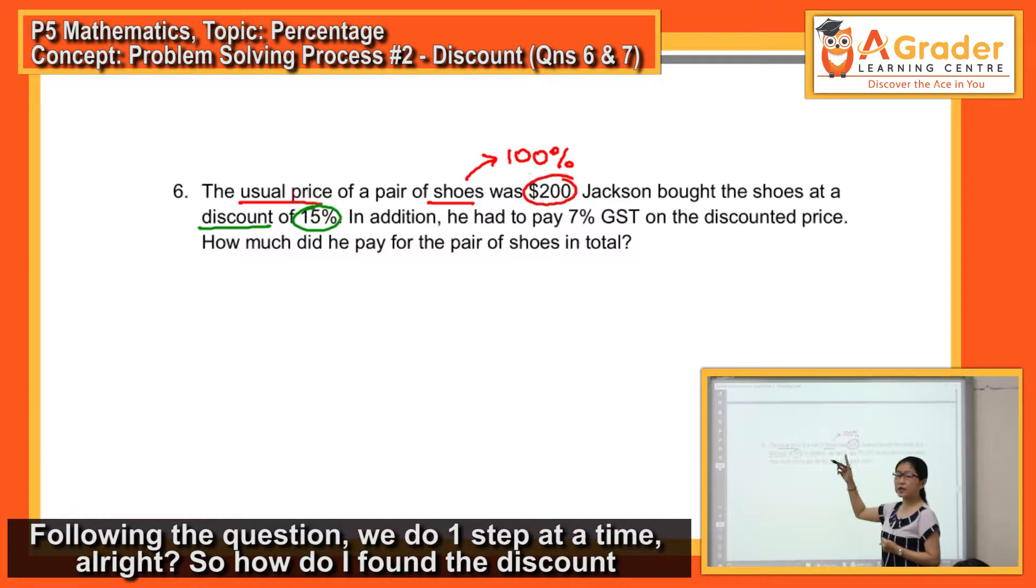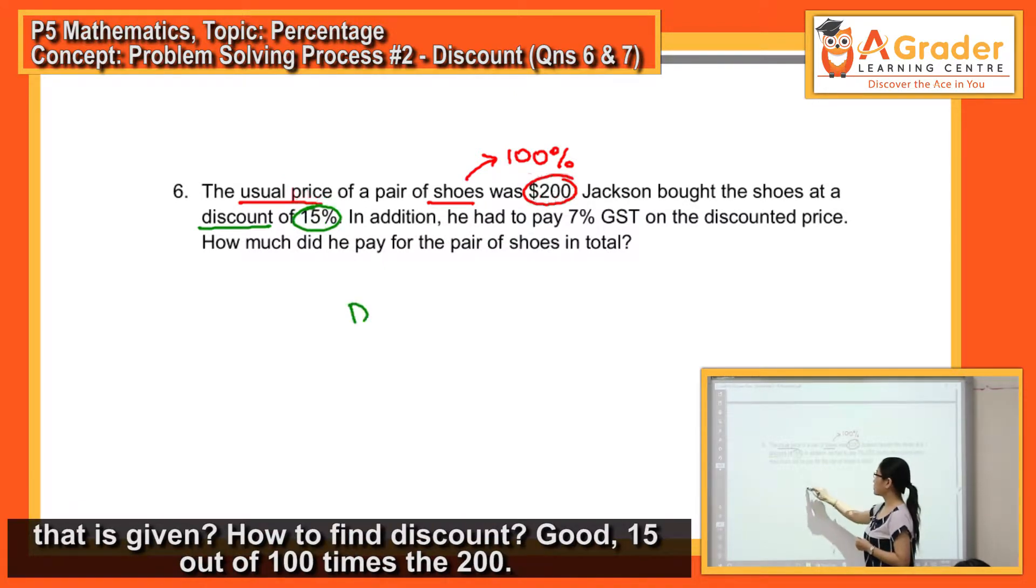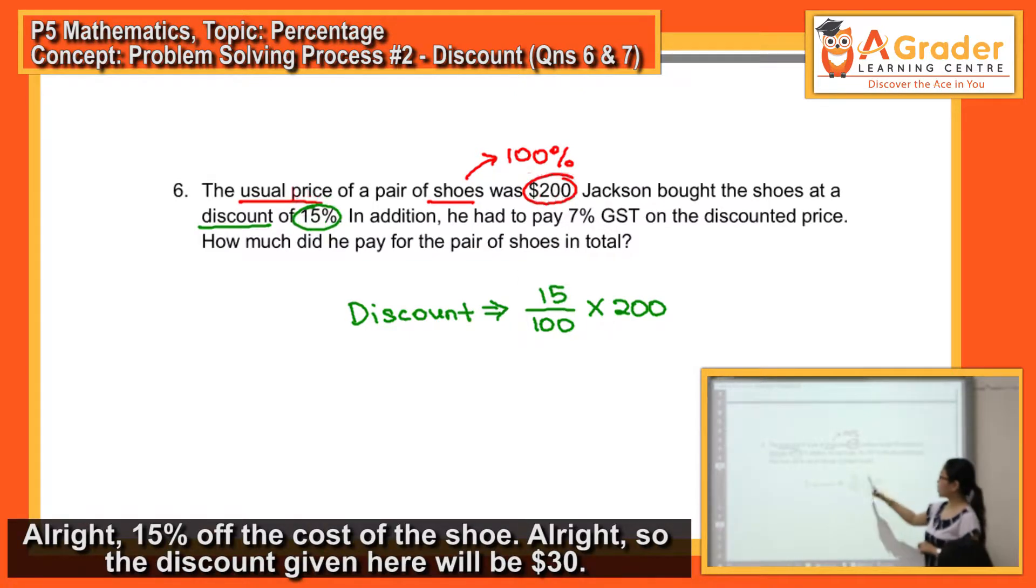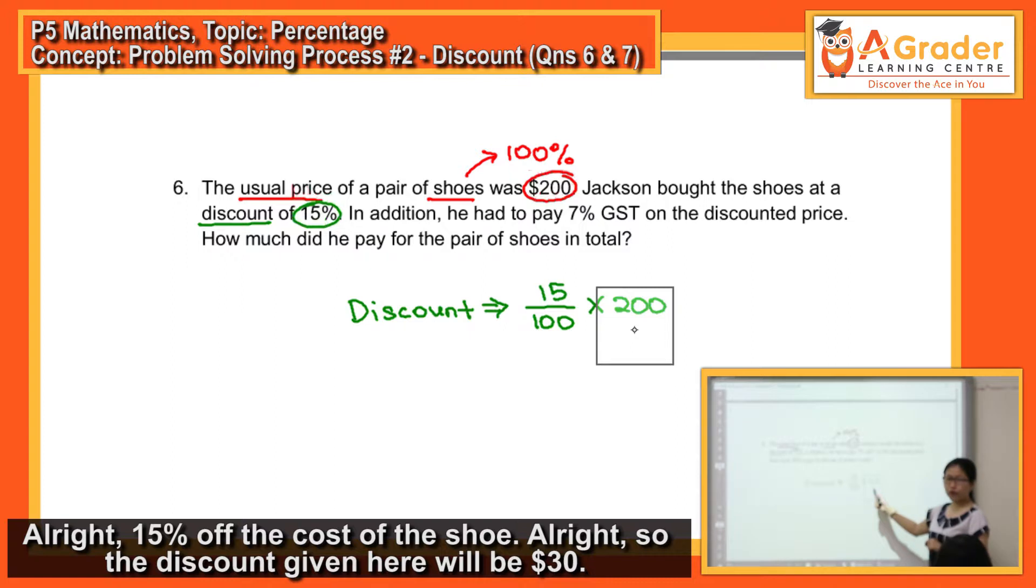So, how do I find the discount that is given? How do I find the discount? Good. 15 out of 100 times the $200. 15% of the cost of the shoe. So, the discount given here will be $30.